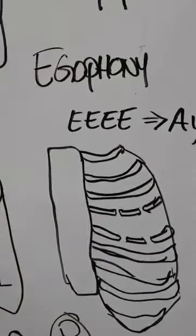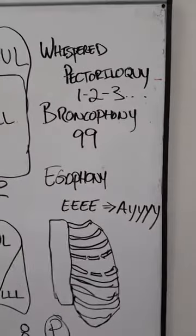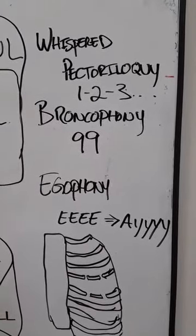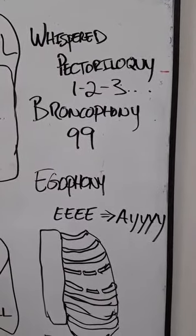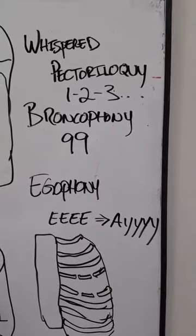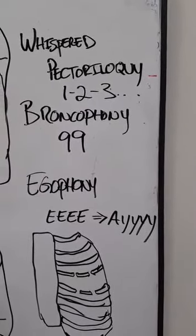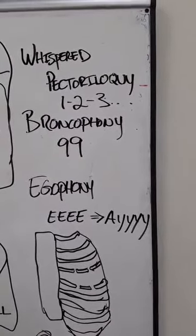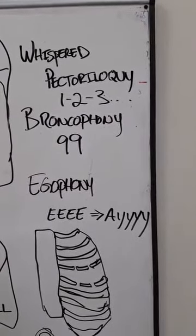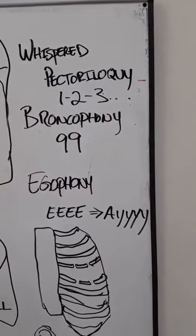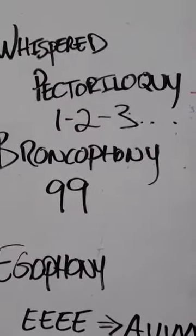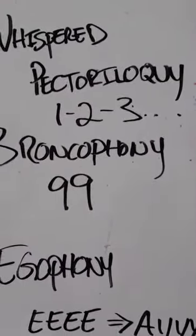When we think about auscultating we have three special considerations. One is called whispered pectoriloquy. With whispered pectoriloquy it is a way to allow us to assess for a sign of consolidation either the presence of fluid or pus within the lung. You simply place your stethoscope up against the patient's chest wall and then you have them whisper one, two, three, four, counting up and listening to them. In a case of consolidation this is going to be more readily transmitted and easier to hear where if it is a normal chest or a normal lung field it'll be muffled.